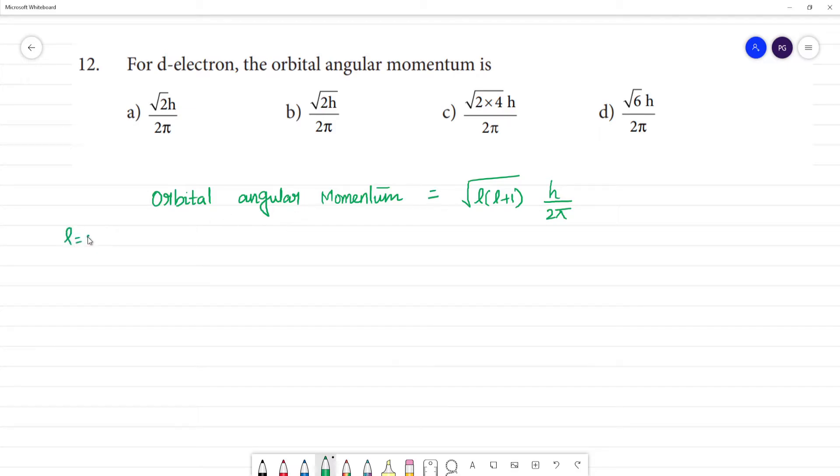Now, l equals 0 for s orbital, 1 for p, 2 for d, and 3 for f orbital. For d electron, l equals 2.